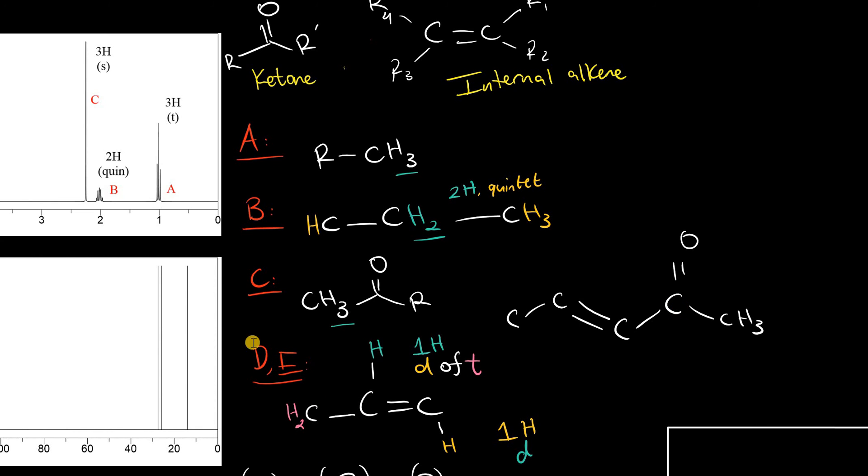So in conclusion, signals D and E validate previous signals that we analyzed. We said that there's a CH2 directly adjacent to the alkene, and that would be signal B here, which contributes to the triplet splitting.